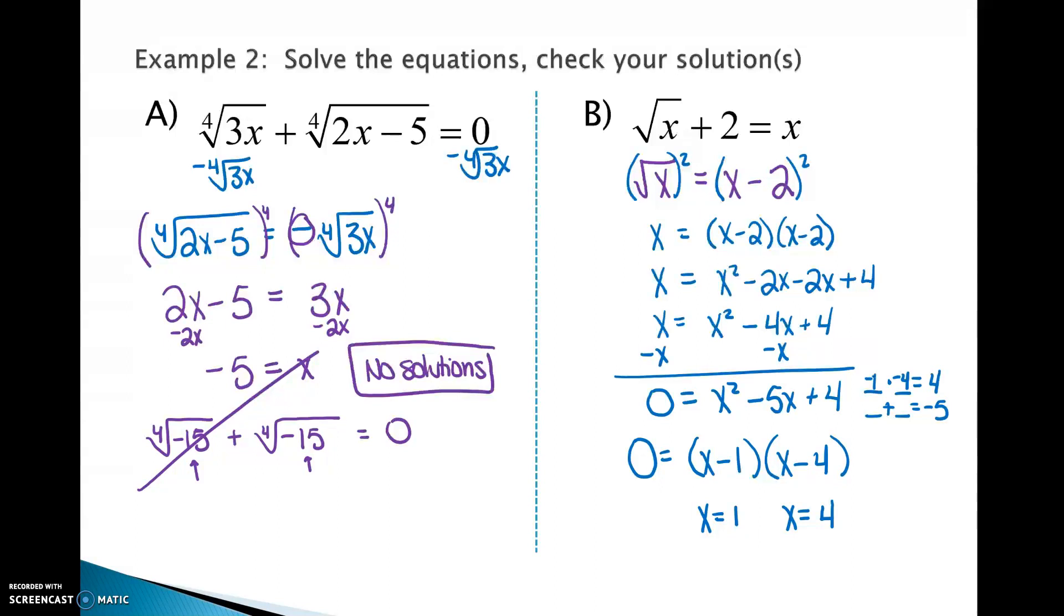We need to check both of these solutions. So first let's check 1. Square root of 1 plus 2 equals 1. The square root of 1 is 1. Does 1 plus 2 actually equal 1? No, it does not. So that is an extraneous solution. Now check 4. Square root of 4 plus 2 equals 4. If this is confusing you, we're just putting a 4 in place of the x's, or before we were putting a 1 in place. That would be 2 plus 2. Does 2 plus 2 actually equal 4? Yes, it does. So x equals 4 is our final solution.